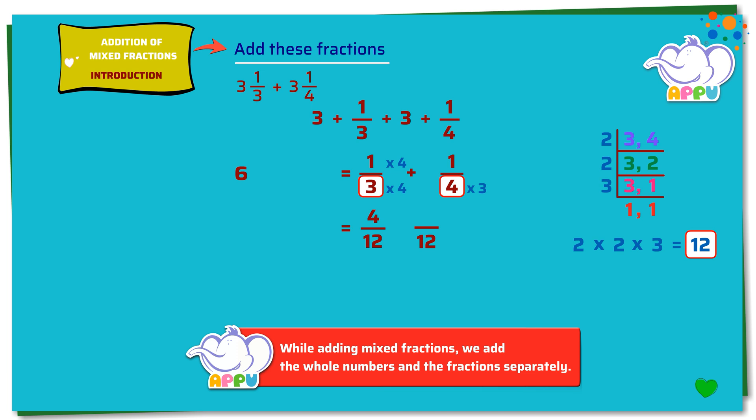Since we multiply the denominator of the second fraction with 3, we multiply the numerator with the same number. That is 1 times 3. We get 3 by 12. This becomes 4 by 12 plus 3 by 12.